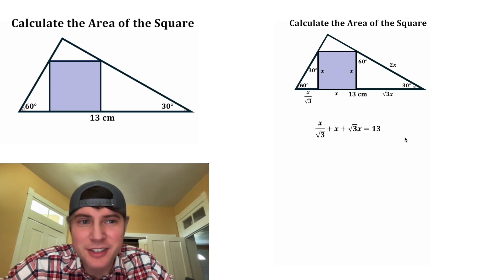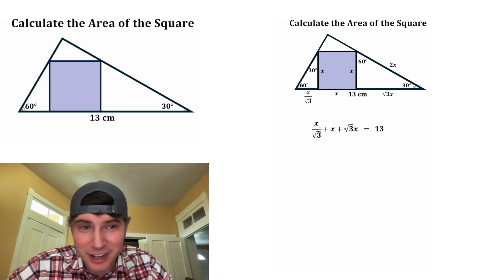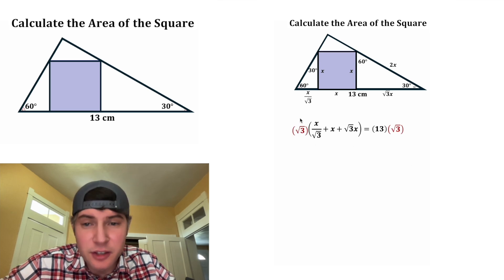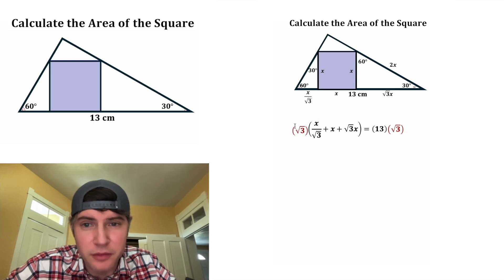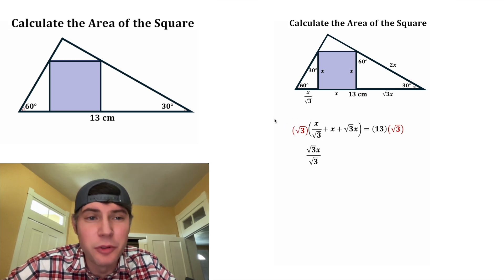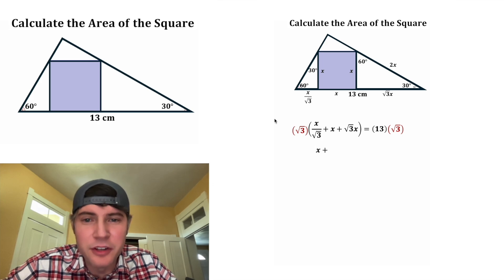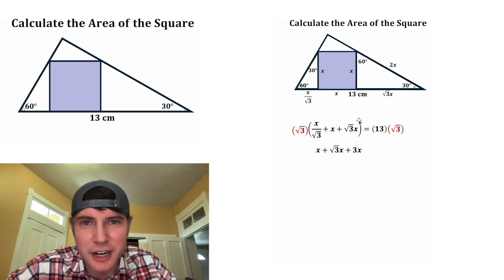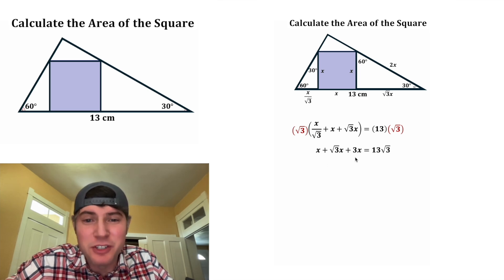So now let's solve for X. This is going to take a little bit of algebra. I don't like working with fractions, so let's get rid of this denominator. We can multiply both sides of the equation by square root of three. The square root of three is going to distribute to all three of these. So for the first one, we get root three X over root three, and the root threes will cancel each other out. And then for the next one, we'll have root three times X. And then for the third term, root three times root three is equal to three, and that'll be multiplied by X.